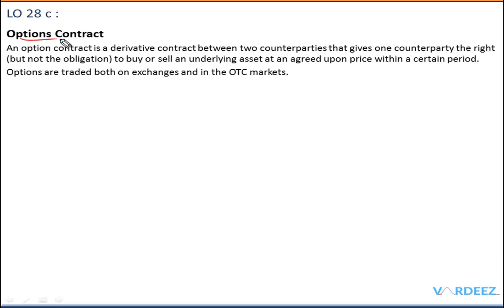Now let's talk about the options contract, which is one of the most widely used derivative contracts in the entire financial market — very popular and very interesting. An options contract is a contract between two counterparties that gives one counterparty the right — and here is the key difference from forwards and futures — the right but not the obligation to buy or sell an asset at an agreed-upon price within a certain time period. Options are traded both on exchanges and in OTC markets.